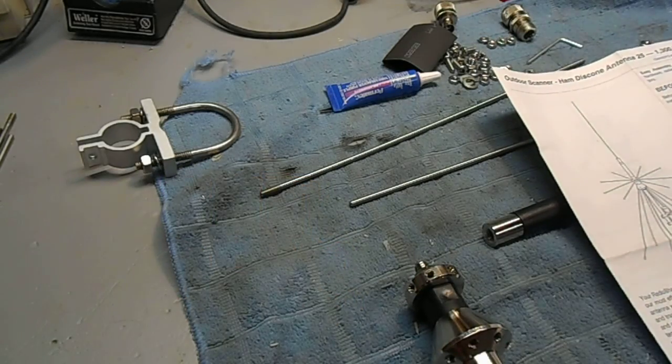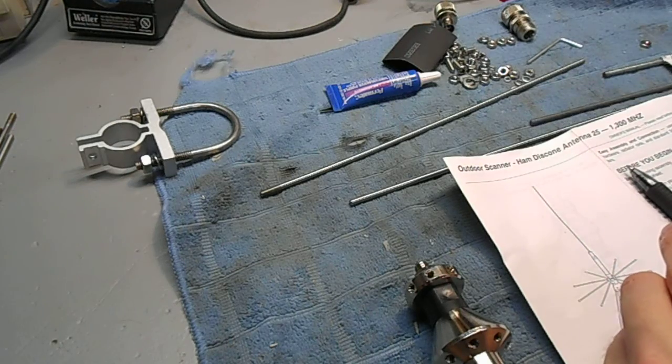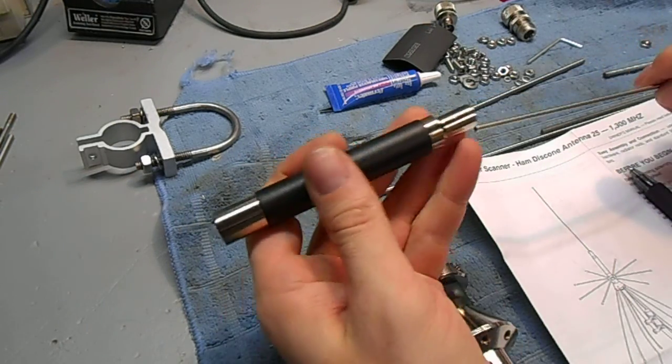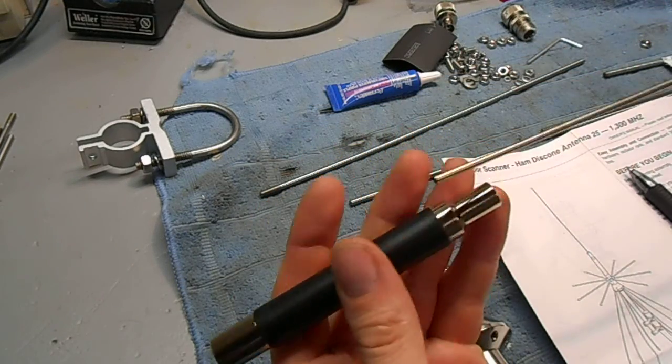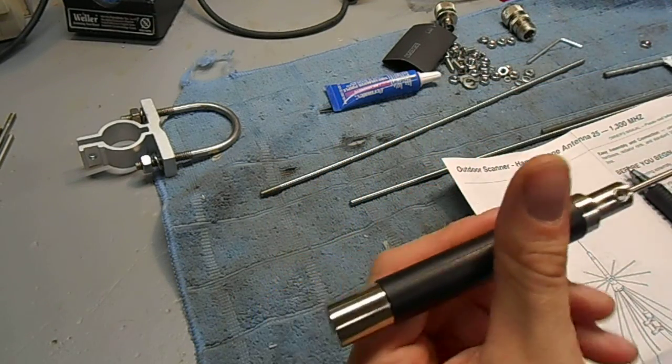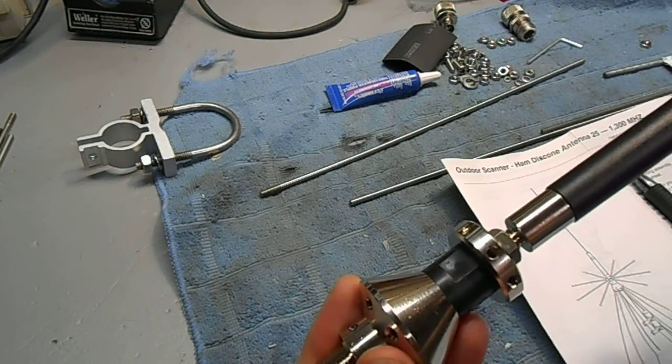To get the 6 meter response, which is the 50 MHz response, the antenna comes with a loading coil and a whip antenna. That mounts on top of the cone element like that.